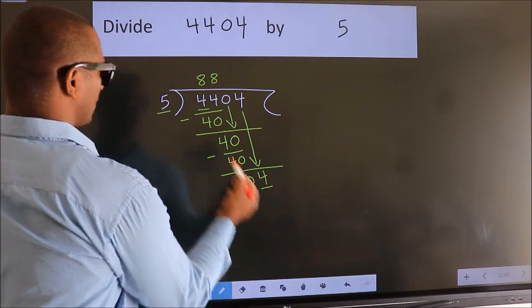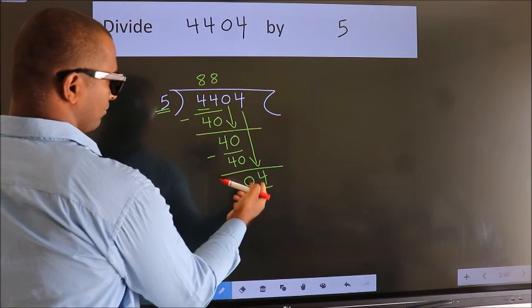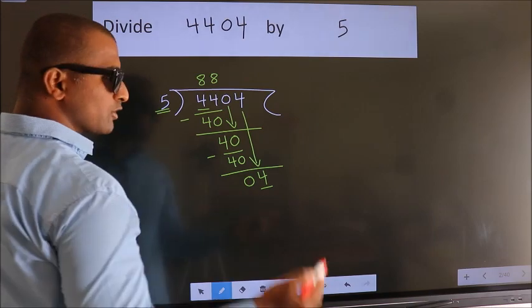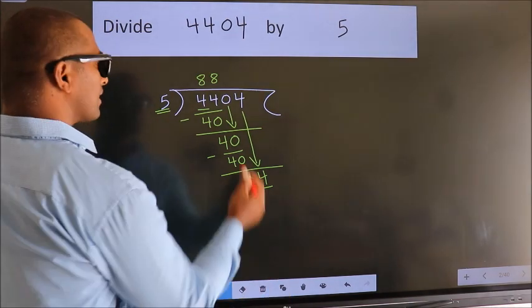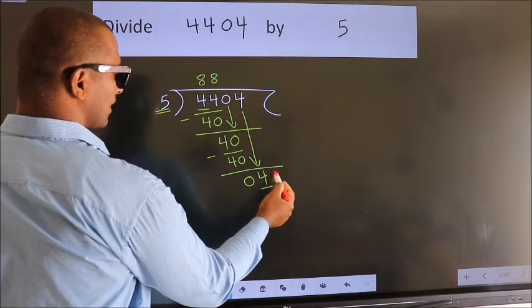Here we have 4. Here 5. 4 is smaller than 5. So what many do is, they directly put dot, take 0.